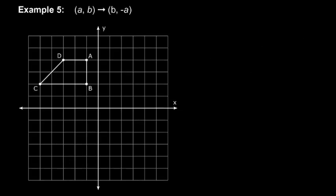And one more example. I think this one's interesting. Here we have a four-sided figure. You see A, B, C, D. And of course, these transformations can apply to any shape, not just triangles and not just polygons either. But in this case, the transformation is (a, b) transforms to (b, -a).